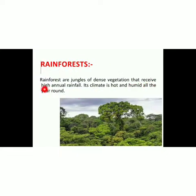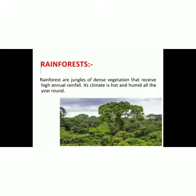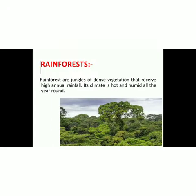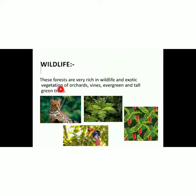The third type is rainforest. Rainforests are jungles of dense vegetation that receive high annual rainfall. Their climate is hot and humid all year round. As the name suggests, these are forests which receive a high amount of rain annually. Rainforests are rich in wildlife and have different forms of vegetation, including evergreen plants. The majority of wild animals are found in rainforests.